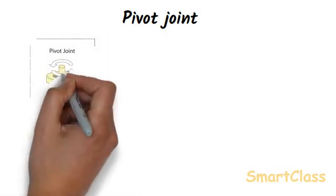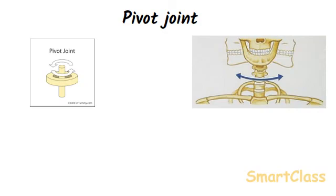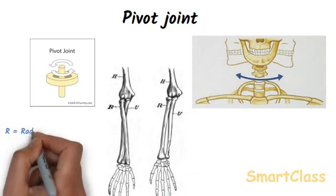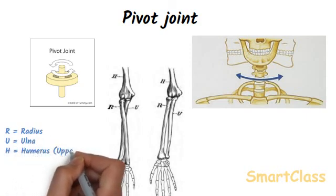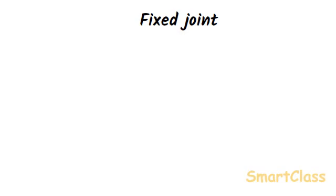In a pivot joint, a cylindrical bone turns in a ring-type bone. The pivot joint allows rotation around an axis. A pivot joint exists between our skull and the top vertebra of the backbone — this allows our head to bend up and down and turn from side to side. Another pivot joint occurs in the forearm near the elbow. The forearm has two bones, radius and ulna, and the pivot joint makes these two bones twist around each other.